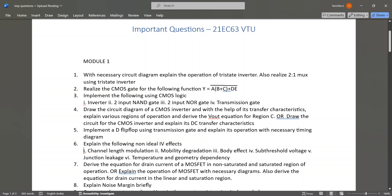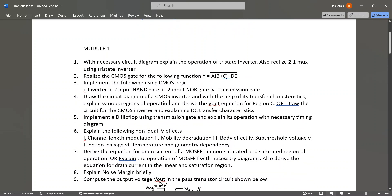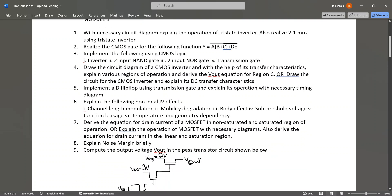Draw the circuit diagram of CMOS inverter with the help of transfer characteristics, or draw the circuit for CMOS inverter and explain DC transfer characteristics. Then implement D flip-flop using transmission gate and explain its operation with necessary timing diagram.